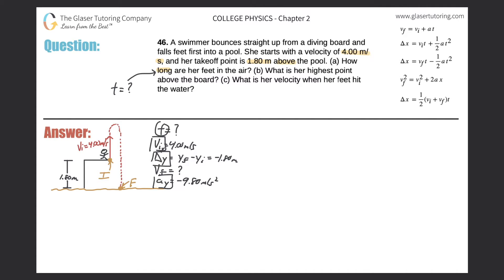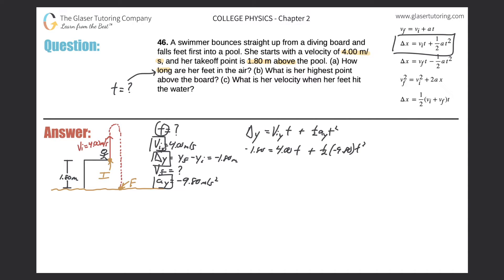Do we know a formula that relates those variables? We do — the upper right-hand side equation number two fits the bill. The change in displacement y equals the initial velocity in y multiplied by time plus one-half of the acceleration in y times time squared. So: negative 1.80 equals 4.00t plus one-half times negative 9.80 times t squared. Cleaning up: negative 1.80 equals 4.00t minus 4.90t squared.